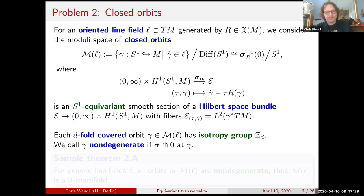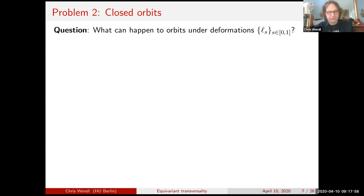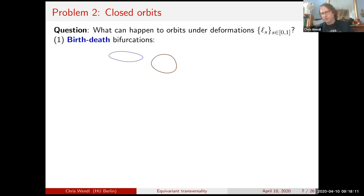Sample theorem 2a: for generic line fields L, all orbits in the space of closed orbits are non-degenerate, so the moduli space is a zero-dimensional manifold. That's a case where equivariant transversality works out fine. More interesting: what can you say about the space of orbits under generic one-parameter deformations of a line field? I want to mention two specific types of bifurcations that are well known.